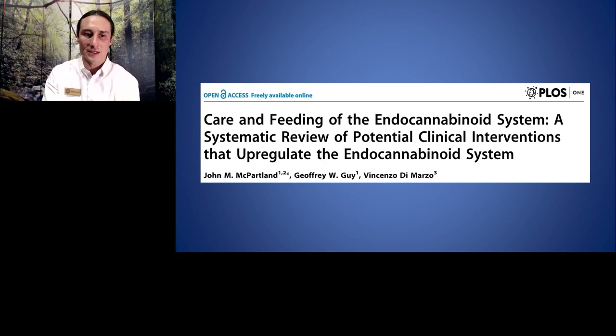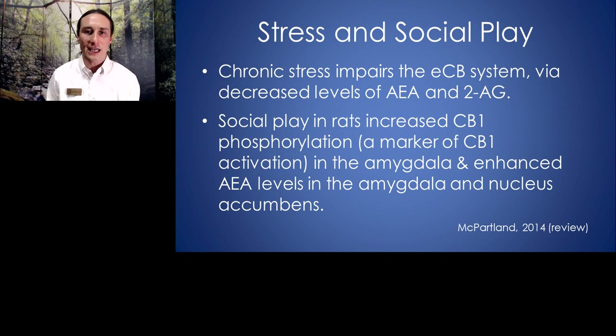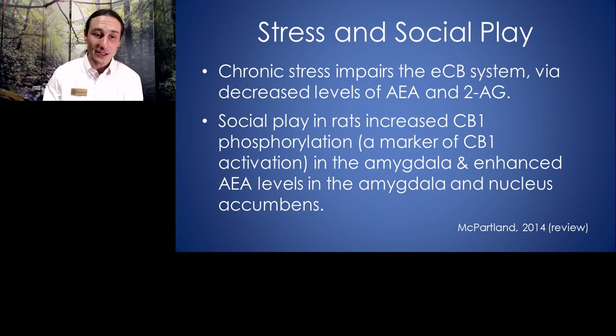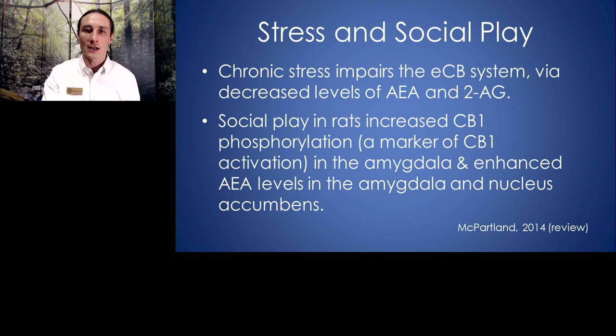A landmark 2014 article called 'Care and Feeding of the Endocannabinoid System' by John McPartland covered many influences on our endocannabinoid system other than cannabis. Stress and social play are really big ones. Chronic stress impairs the endocannabinoid system via decreased levels of anandamide and 2-AG. Social play in rats increases CB1 phosphorylation — a marker of how active CB1 is in the amygdala — and enhances anandamide levels in the amygdala and nucleus accumbens. Less chronic stress and more play are basics of health that affect our endocannabinoid system.